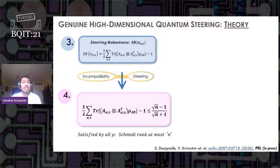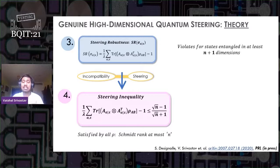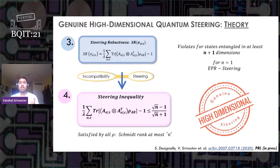It turns out that by exploiting the connection of the incompatibility of MUBs and steering, we can bound steering robustness with the Schmidt rank of the system. This bound will be satisfied for all the states rho that has Schmidt rank at most n. Thus we get our steering inequality. All in all, if any state violates this steering inequality, it is entangled in at least n plus 1 dimensions. For n equals 1, it shows conventional EPR steering that every other experiment of steering uses. Therefore, we are the first one to introduce the concept of genuine high dimensional steering.